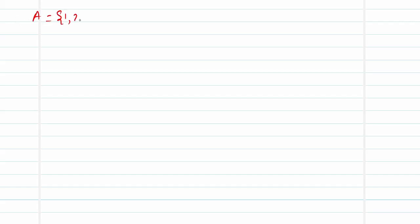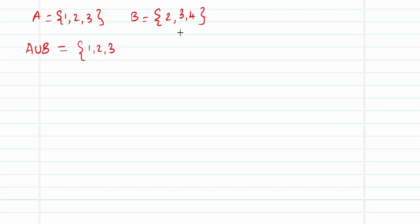Now let us work through some problems. Let A = {1, 2, 3} and B = {2, 3, 4}. For A∪B — elements in A or B — we take all elements of A: 1, 2, 3, then add elements of B not already listed. Since 2 and 3 are already there, we only add 4. So A∪B = {1, 2, 3, 4} — a unique collection with no repetitions.